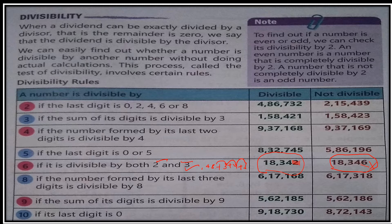A number is divisible by 8 if the number formed by its last three digits is divisible by 8. So for 617,168, we check if the last three digits form a number divisible by 8. For divisibility by 9, we add all digits — if the sum is divisible by 9, the number is divisible by 9. For divisibility by 10, we just check if the last digit is 0.